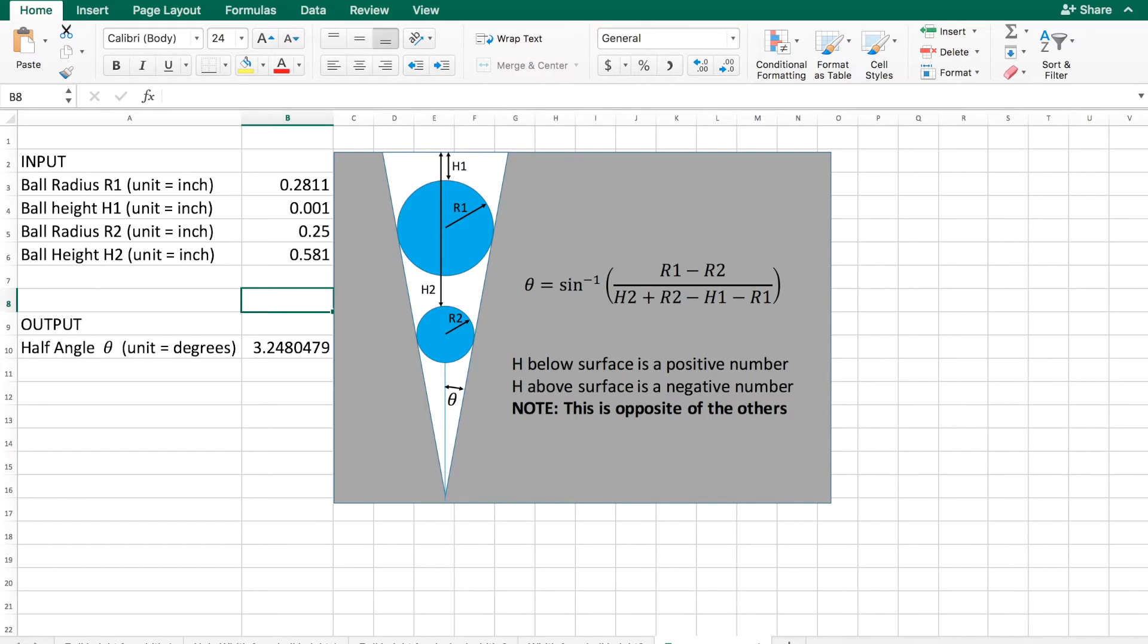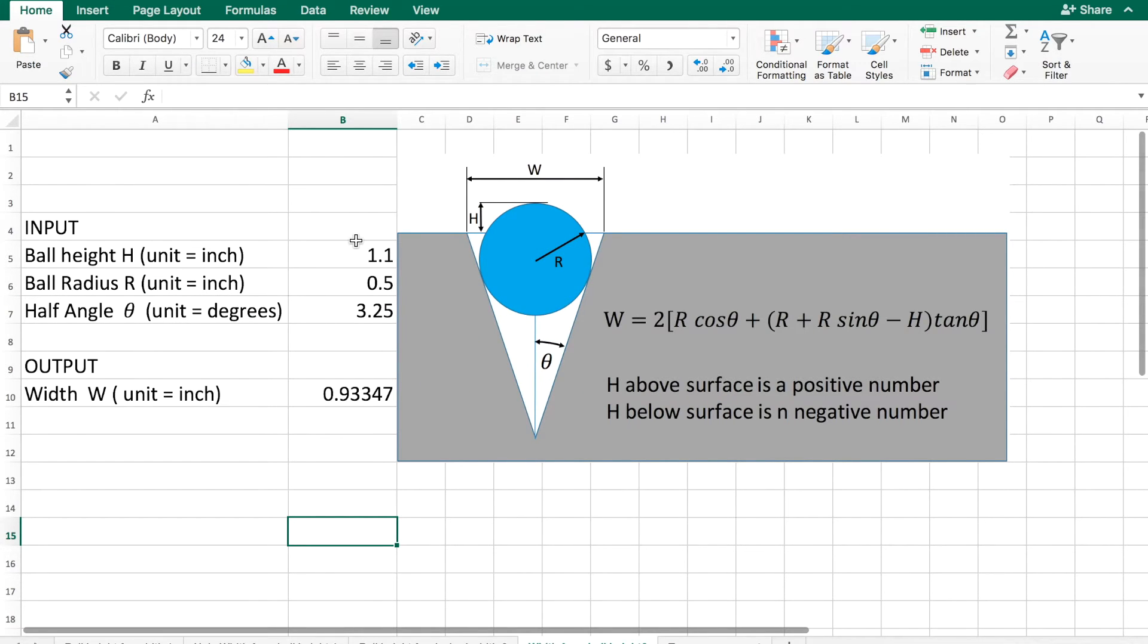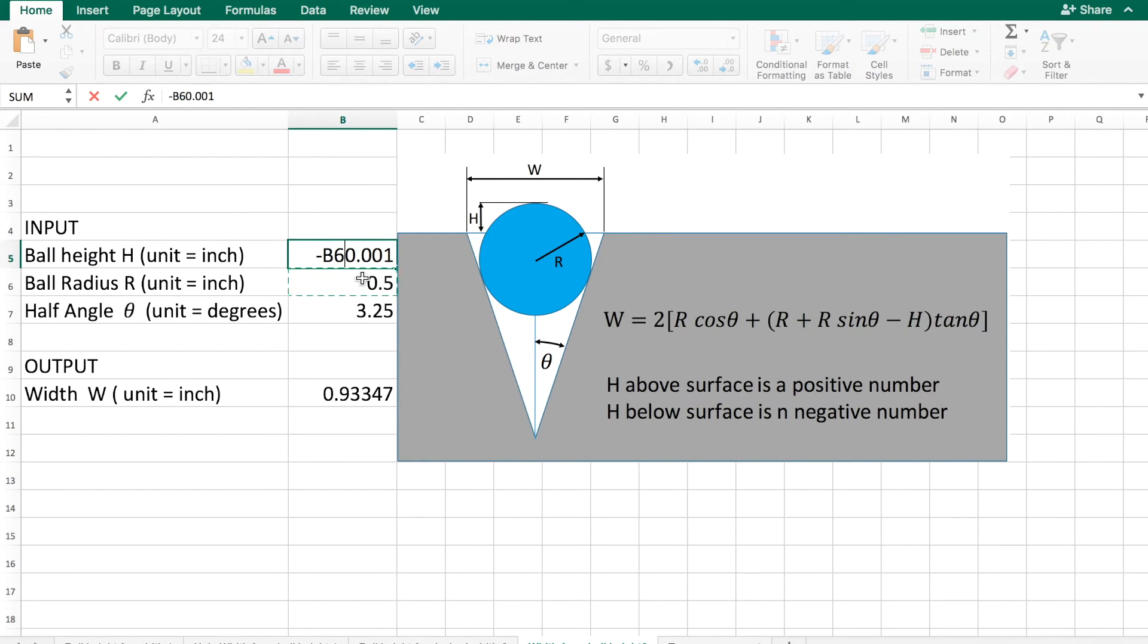The other thing is, the derivation that I've already done is the width from ball height. Let's give that a try to see if it comes up with the same width. And on this one, the height above the surface is positive. And the height below the surface is negative. So these would be negative ball heights. So the ball height for ball one was minus 0.001. The radius was 0.2811. The angle was 3.25. So we came up with the width of the mouth is 0.5951433. I'm going to copy it down here.